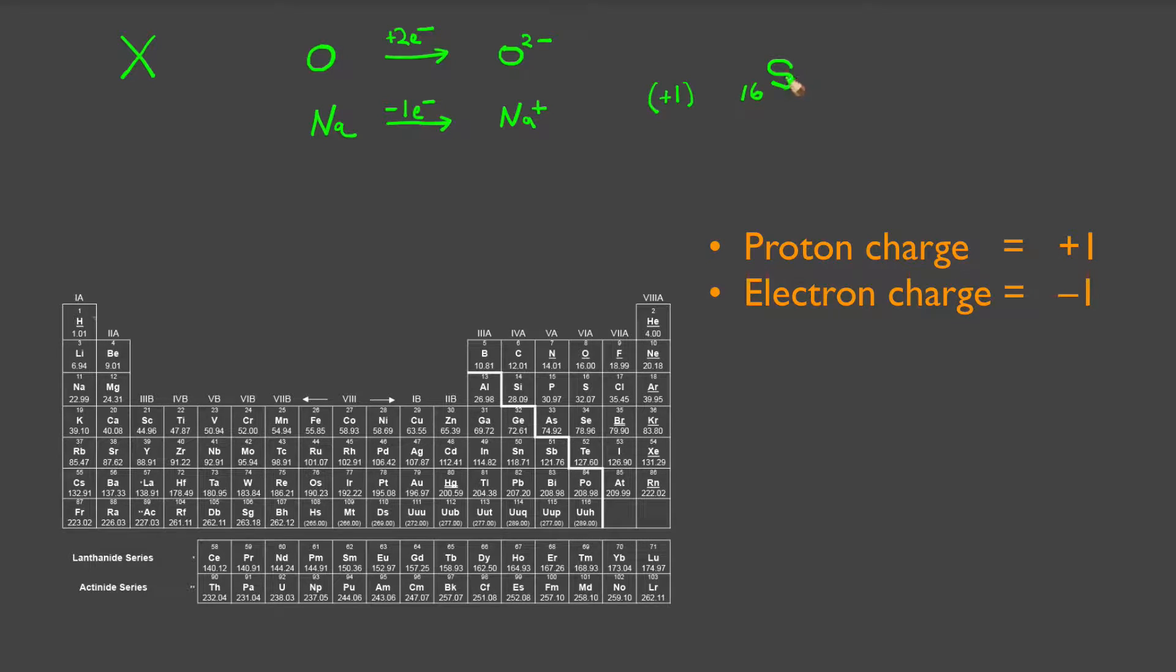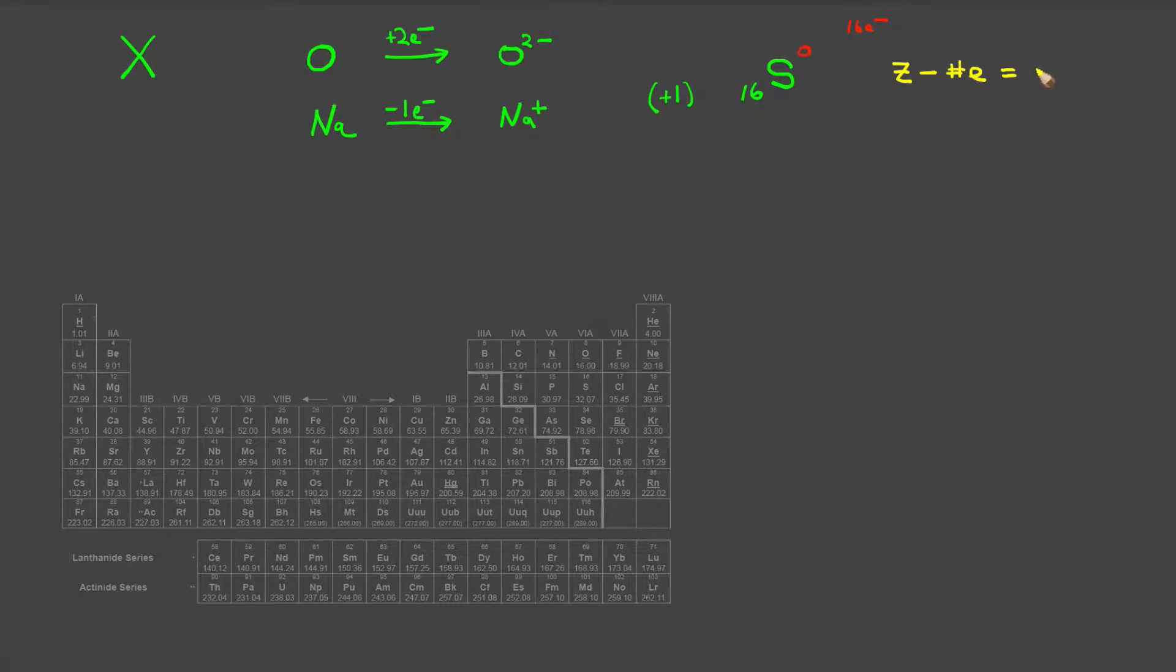And since each proton carries a charge of plus one, we know sulfur carries a positive 16 charge. Since we have determined that elemental sulfur has a charge of zero, it stands to reason that 16 electrons must be present. Mathematically, we observe that the number of protons minus the number of electrons is equal to the charge.